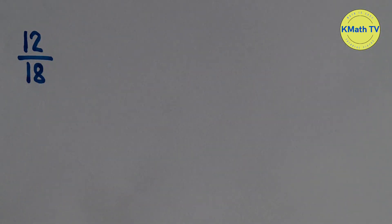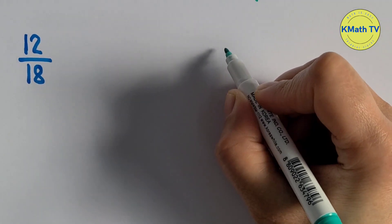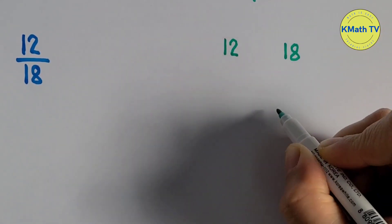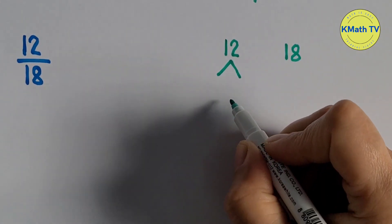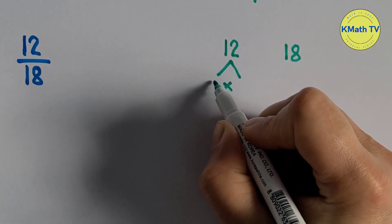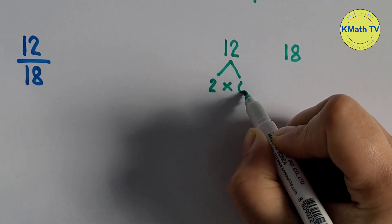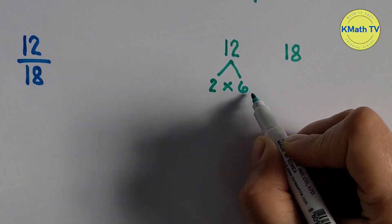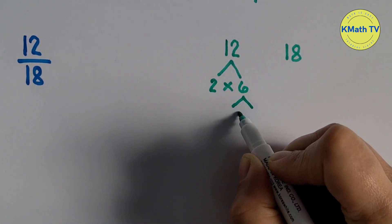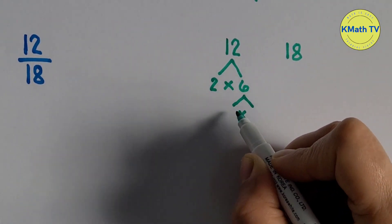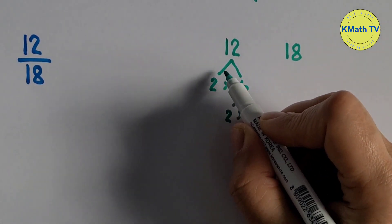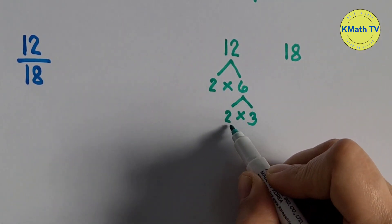Last example: let's reduce 12 eighteenths to lowest term. First, let's get the GCF of 12 and 18 using prime factorization. Think of two numbers that if you multiply, the product is 12. We can multiply 2 and 6. 2 times 6 equals 12. 2 is a prime number and 6 is a composite number, so we need to find the prime factors of 6. Think of two numbers that multiply to give 6: 2 and 3. 2 times 3 equals 6, and 6 times 2 equals 12. So the prime factors of 12 are 2, 2, and 3.